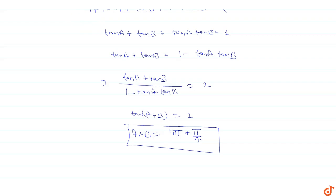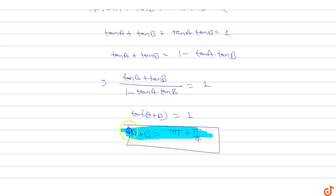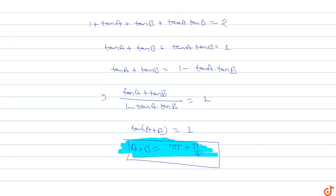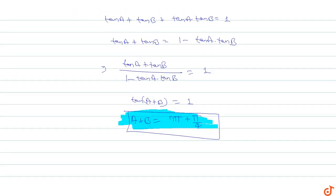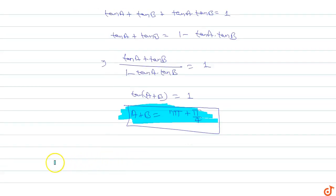Where n belongs to an integer value. So the general solution of (1 + tan a)(1 + tan b) = 2 is a + b = nπ + π/4. This is the answer for this question.